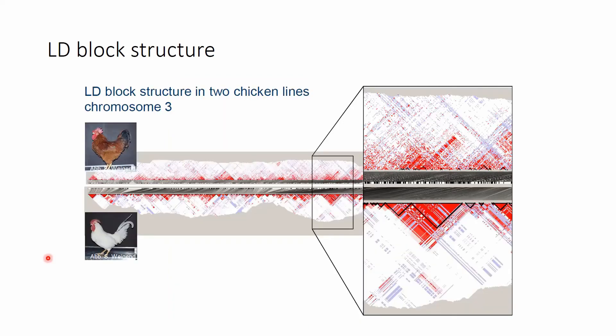This picture about the LD block structure in a chicken genome demonstrates a similar thing as the previous slide but on a much larger part of the genome.